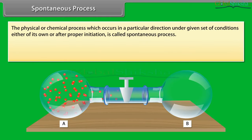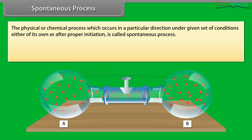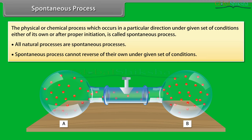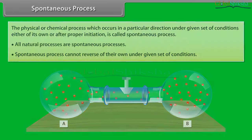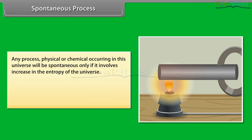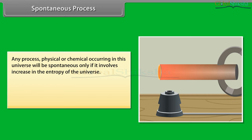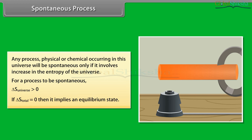Spontaneous process: a physical or chemical process which occurs in a particular direction under a given set of conditions, either on its own or after proper initiation, is called a spontaneous process. All natural processes are spontaneous. Spontaneous processes cannot reverse on their own under the same conditions. Any process will be spontaneous only if it involves an increase in the entropy of the universe. For a process to be spontaneous, ΔS_universe must be greater than zero. If ΔS_total equals zero, it implies an equilibrium state.